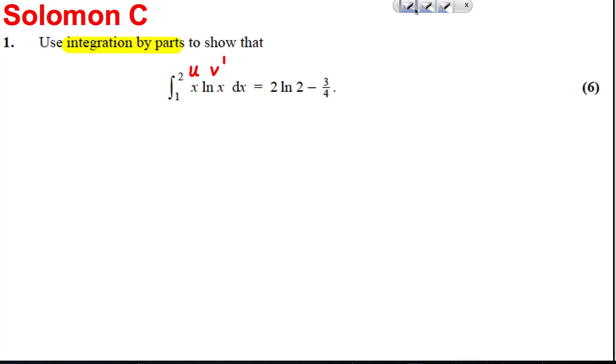So I'm not going to choose them that way around. I'm going to make that be my u and that be my v dashed. Can I differentiate this? I certainly can, it's one over x. Can I integrate this? I can, it's a half x squared.